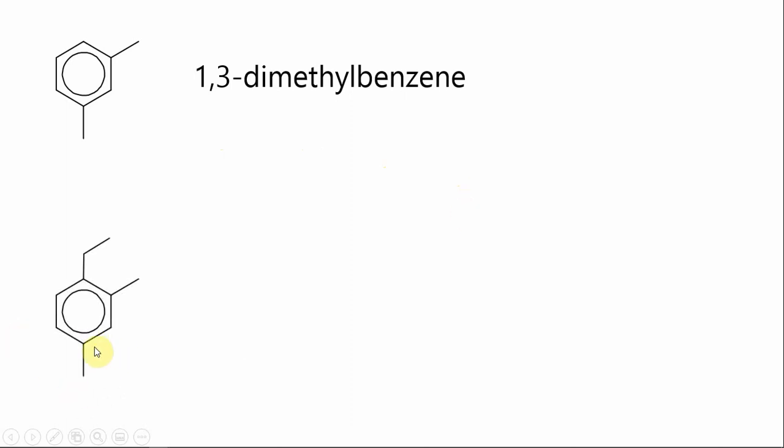In this circumstance, we try to get the numbers as small as possible. We follow alphabetical order and start with the largest group here, the ethyl. So this would be one-ethyl-two-four-dimethyl benzene.